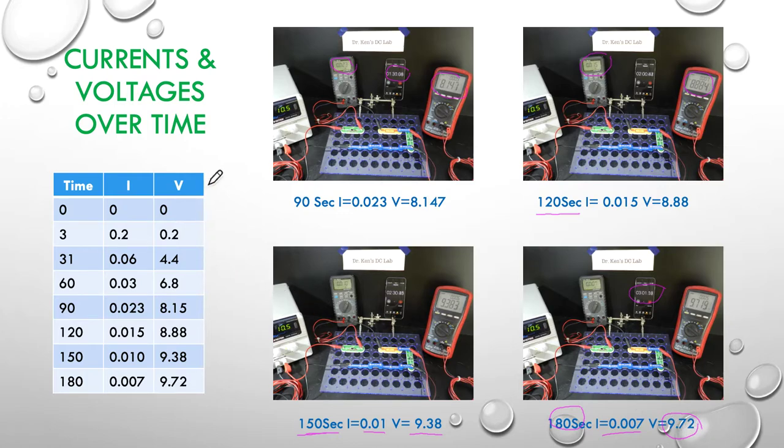So again, I've just brought forward the four results from the previous slide and the four results on this slide. And we can see this exponential decay of the current. So the current is decaying like this and the voltage is rising like this.